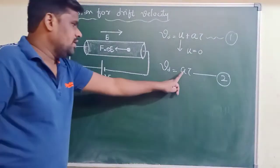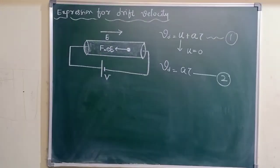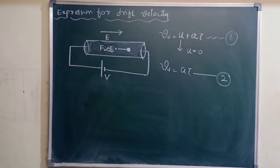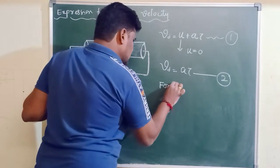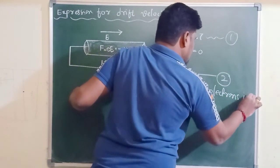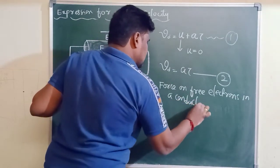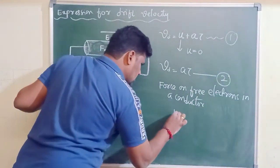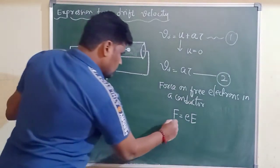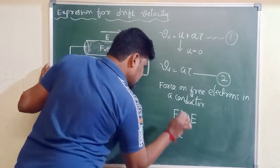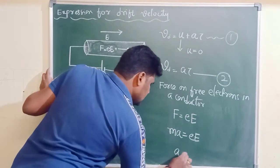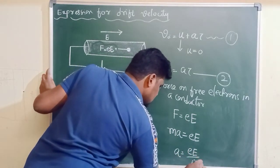Now let me calculate the acceleration of free electrons in a conductor. Each free electron experiences a force F = eE. As per Newton's second law, force equals mass times acceleration, so ma = eE. Therefore, acceleration A = eE/m. This is the acceleration of a free electron in a conductor.